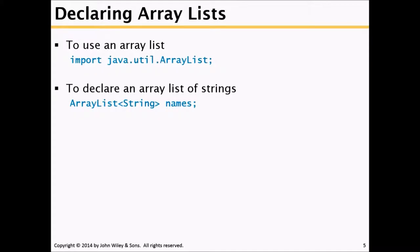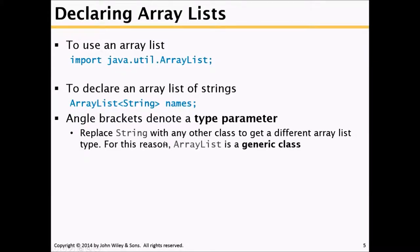To declare an ArrayList of strings, use the keyword ArrayList, followed by an opening angle bracket, the type String, a closing angle bracket, and then the variable name ending with a semicolon. For example, 'names' is our ArrayList of type String. The angle brackets denote a type parameter, so you can replace String with any other class like BankAccount or Integer. For this reason, ArrayList is a generic class.